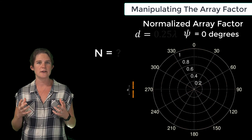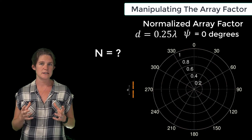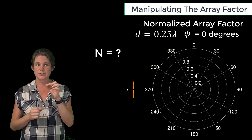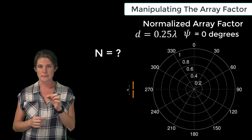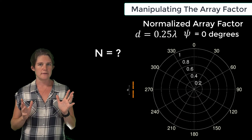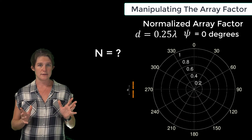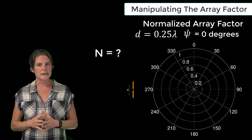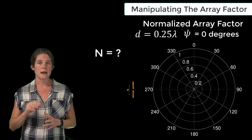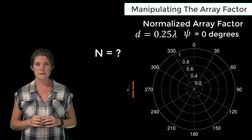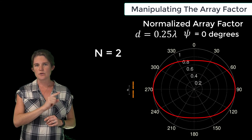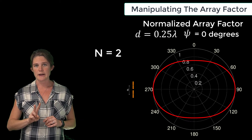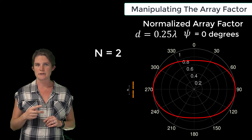Now, what if we instead fix the distance between the elements at a quarter wavelength — so d equals a quarter lambda — and vary the number of antenna elements, n? For this discussion, we will continue to keep the phase difference phi at zero degrees. Here is the normalized array factor of the two-element antenna array at a quarter wavelength separation.